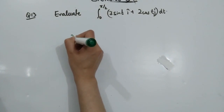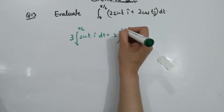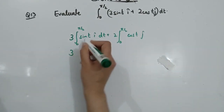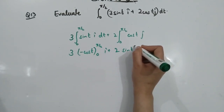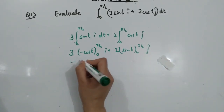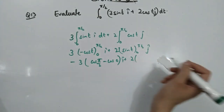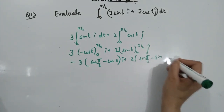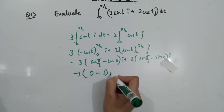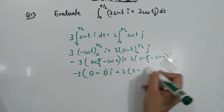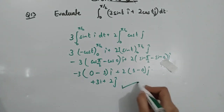Question 13 is straightforward: apply integration from 0 to pi/2 to each component. The i component has 3sin(t), whose integration is minus cos(t); the j component has 2cos(t), whose integration is sin(t). Applying limits from 0 to pi/2: for i, minus 3 times (cos(pi/2) minus cos(0)) = minus 3 times (0 minus 1) = 3. For j, 2 times (sin(pi/2) minus sin(0)) = 2 times (1 minus 0) = 2. Final answer: 3i plus 2j.